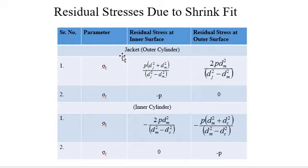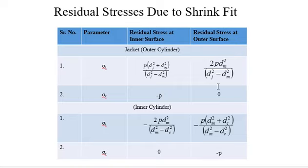For stresses due to shrink fit, sigma_r and sigma_t are induced. The magnitude of sigma_t at the inner surface of the jacket (outer cylinder) is: p × (dj² + dm²) / (dj² − dm²). At the outer surface, sigma_t equals 2p × dj² / (dj² − dm²). For sigma_r, at the inner surface it is −p and at the outer surface it is zero. For the inner cylinder, the magnitude of sigma_t is −2p × dm² / (dm² − dc²) — the negative sign indicates it is compressive.